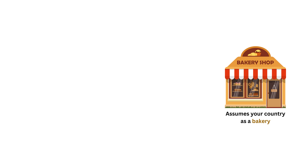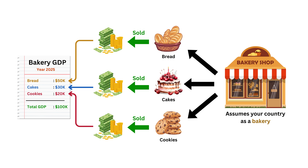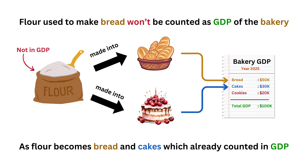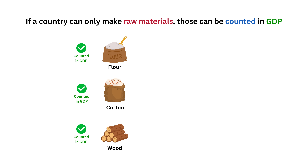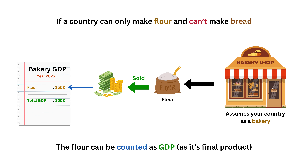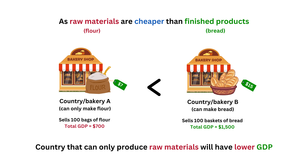For example, if your country were a bakery, GDP would be the total revenue of all the bread, cakes, and cookies baked and sold in that bakery over a year. But the flour used to make the bread and cakes wouldn't be counted as GDP because it's already included in the value of the finished bread and cakes — to avoid double counting. If a country primarily sells raw materials and cannot make finished products, those raw materials are the final products and are counted in GDP. Because flour is cheaper than bread, the GDP of that country will be lower than a country that can make finished products like bread.